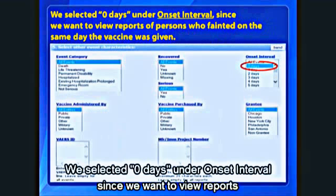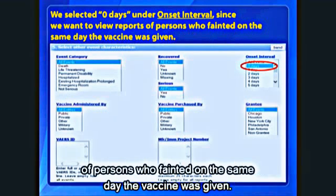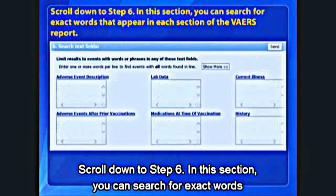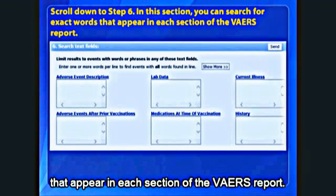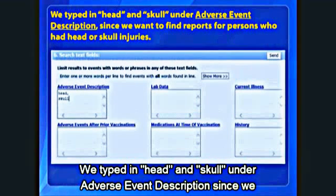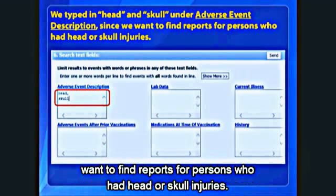We selected zero days under Onset Interval, since we want to view reports of persons who fainted on the same day the vaccine was given. Scroll down to Step 6. In this section, you can search for exact words that appear in each section of the VAERS report. We typed in Head and Skull under Adverse Event Description, since we want to find reports for persons who had head or skull injuries.